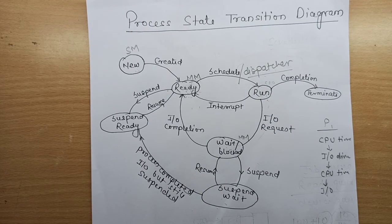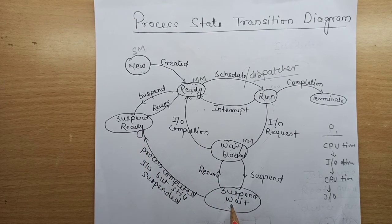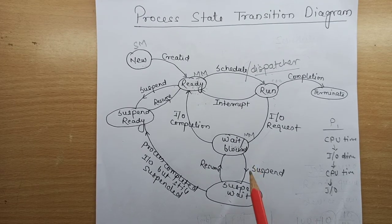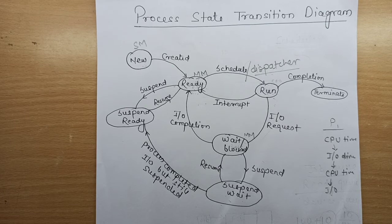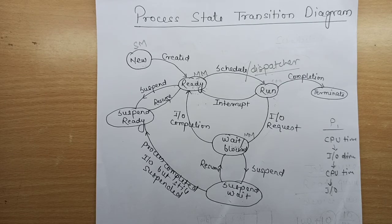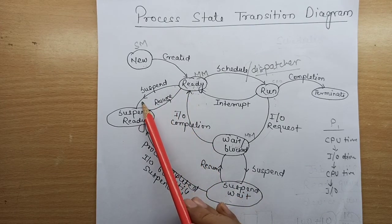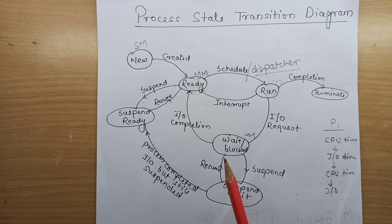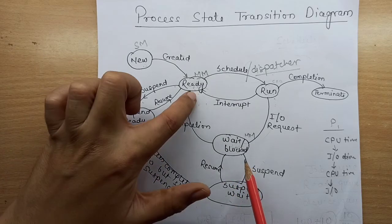There are two additional states: suspend wait and suspend ready. When a high-priority process arrives and there is no space in main memory, some lower-priority processes must be swapped back to secondary memory (disk). This process is called suspending. You can see both suspend wait and suspend ready in the diagram.